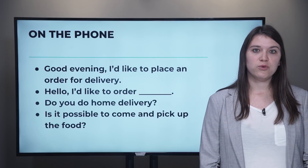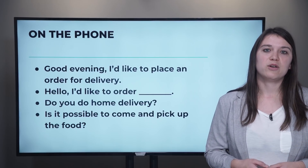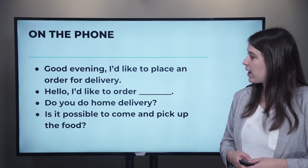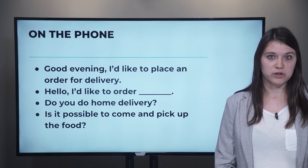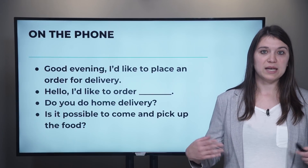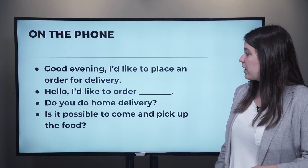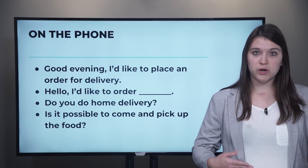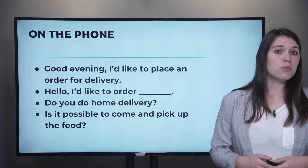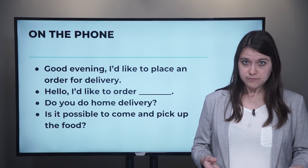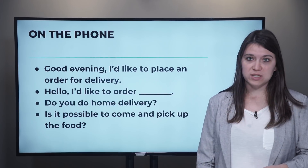The first thing you'll need to do is call the restaurant where you want your food delivered from. You can say something like, 'Good evening, I'd like to place an order for delivery.' To place an order means to order something. Or simply, 'Hello, I'd like to order,' and then you say whatever it is that you want. Not all restaurants deliver, so you'll probably need to ask, 'Do you do home delivery?'